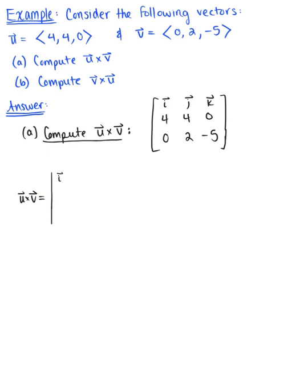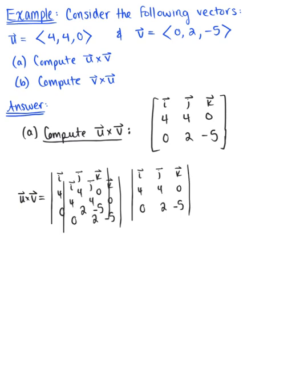We have i hat, j hat, k hat, 4, 4, 0, 0, 2, negative 5. And again, because we have three entries in the first row, we're going to need three components of our determinant with alternating terms.